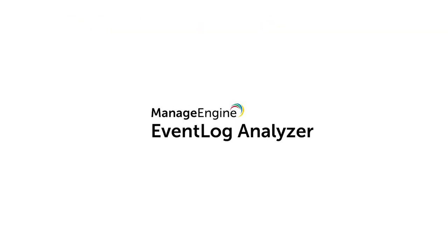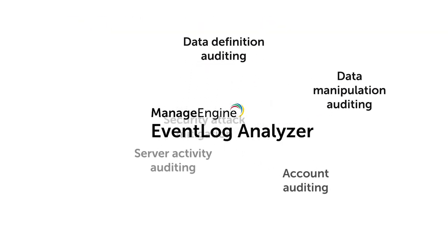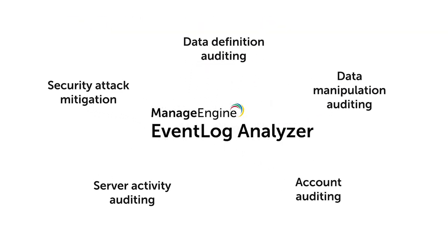Starting off with the list of five: the first one is Data Definition Auditing, the second one is Data Manipulation Auditing, third is Account Auditing, fourth is Server Activity Auditing, and the fifth one is Security Attack Mitigation. I'll be describing these features in the later part of the slide here.